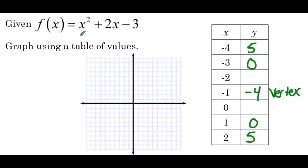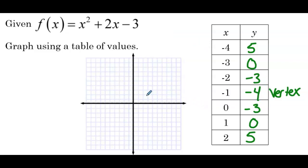For x = −2: (−2)² + 2(−2) − 3 = 4 − 4 − 3 = −3. By symmetry, the output of 0 is also −3. So we can now plot these points.